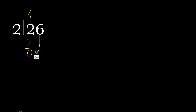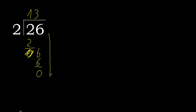Next, eliminate 0 on this side. 6: 2 multiplied by 3 is 6, which is not greater. 6 minus 6 equals 0. Therefore 0, and here there is no number, so finish it: 26 divided by 2 is 13.